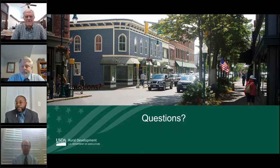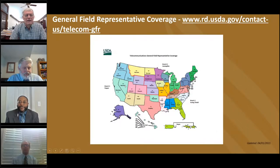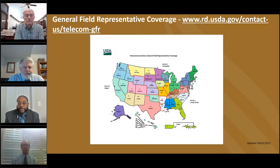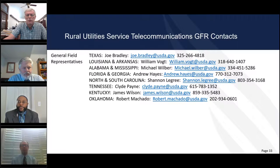Next question: who is the GFR for California and Nevada? According to the map, that's going to be Robert Machado, who's also listed as Oklahoma. Robert was recently in Oklahoma and accepted the position when the GFR in California retired. You can find this information by clicking on the map under Contact Us and looking up GFRs. Robert is also going to be hosting a DLT webinar out there in the West.